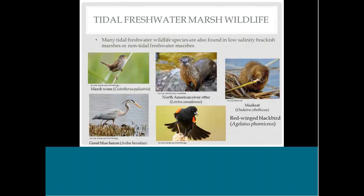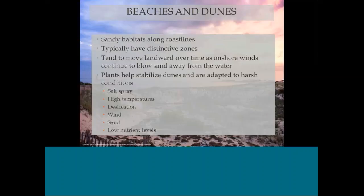There aren't really any obligate tidal freshwater marsh species, so the wildlife that tends to use these areas can also be found in brackish or non-tidal marshes. Common wildlife includes marsh wrens, red-winged blackbirds, herons, muskrats, and even otters swimming around in there.